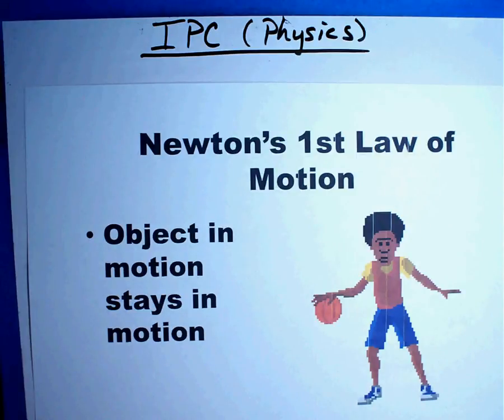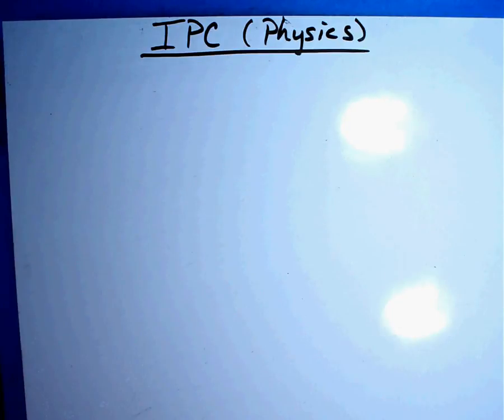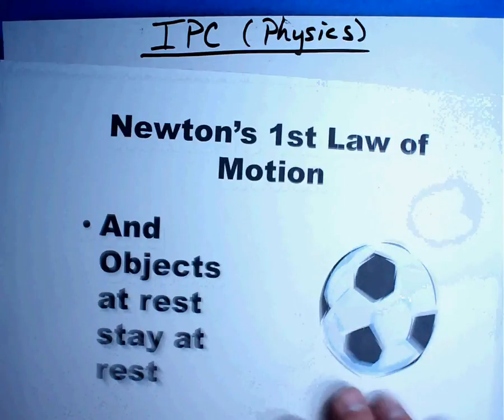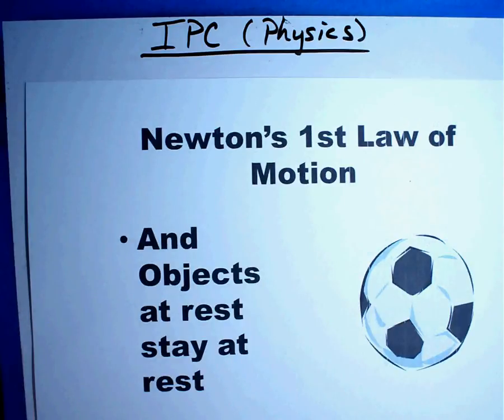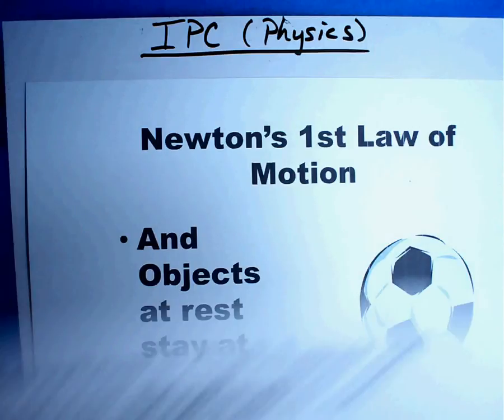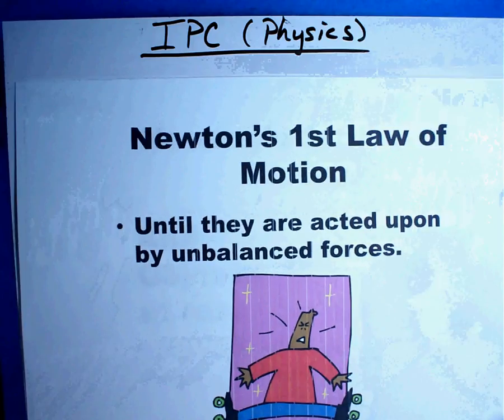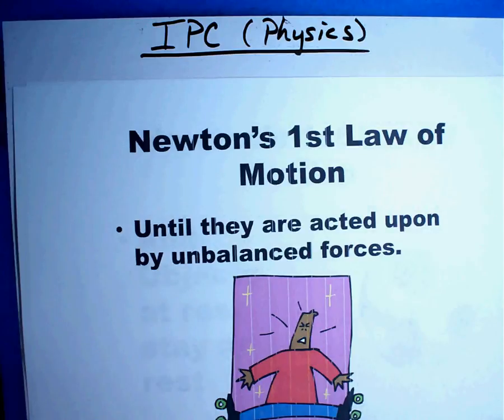Let's talk about Newton's first law of motion. An object in motion stays in motion. The other part of the law says, and an object at rest stays at rest. If an object is moving, it will stay moving. If an object is stayed still, it will stay there, except until they are acted upon by unbalanced forces.